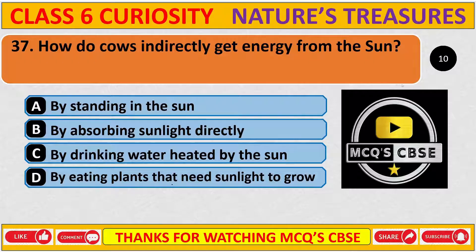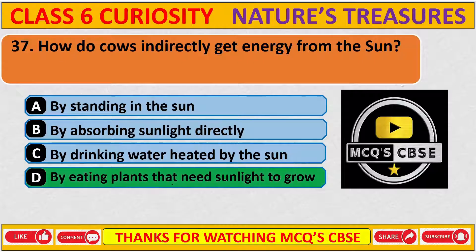How do cows indirectly get energy from the sun? The correct answer is D: By eating plants that need sunlight to grow.